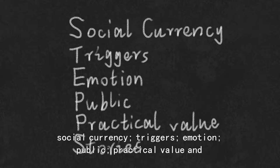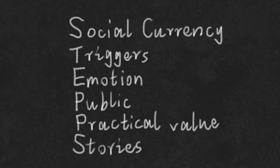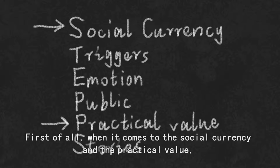The six components are: social currency, triggers, emotion, public, practical value, and stories.